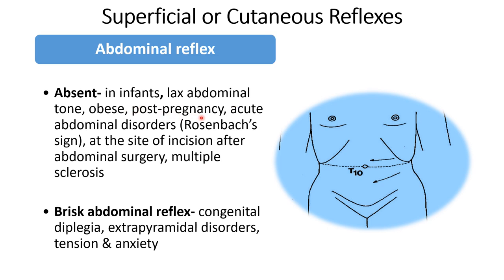Absent abdominal reflex can be seen in infants, those with lax abdominal tone, obese patients, after pregnancy, in acute abdominal disorder (Rosenbach sign), at the site of incision after abdominal surgery, or in multiple sclerosis. Brisk abdominal reflex can be seen in congenital diplegia, some extrapyramidal disorders, and with tension and anxiety.